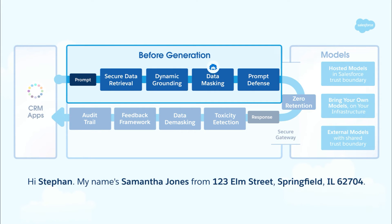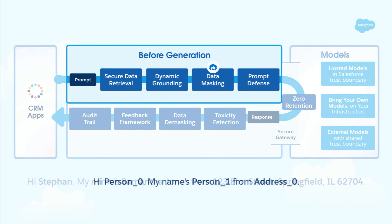Then, to prevent sharing PII, we use data masking. A detection tool identifies sensitive data like government IDs, replacing them with placeholders like Person 0, Person 1, etc. The Trust Layer maintains this placeholder-to-origin mapping for you.